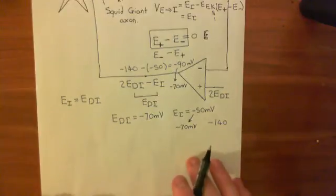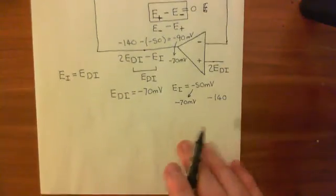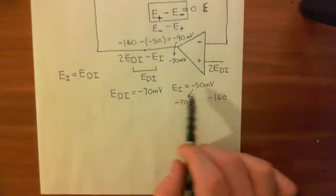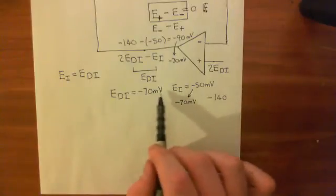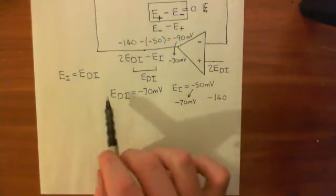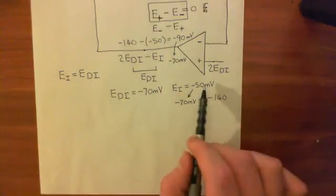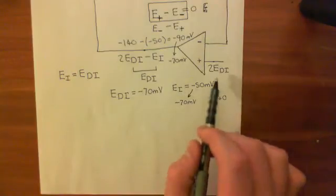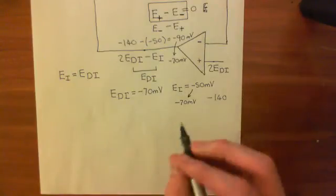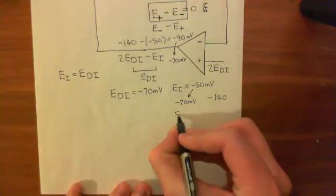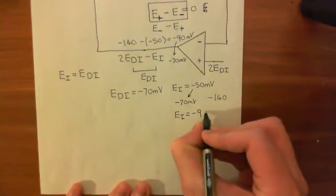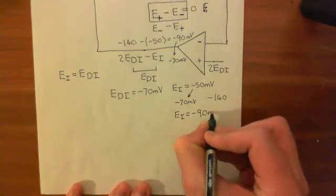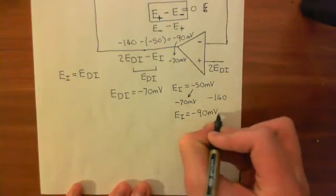Let's do another example. We've done the example of how this works if the electrical potential you desire the intracellular compartment to have is lower than the electrical potential it actually has. Now let's do the example where the electrical potential the intracellular compartment actually has is more negative than the electrical potential you want it to have.